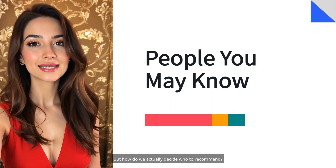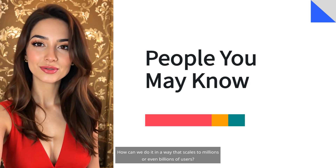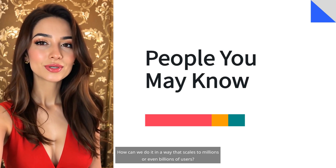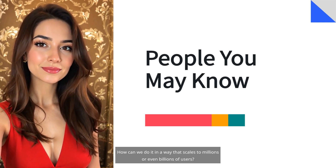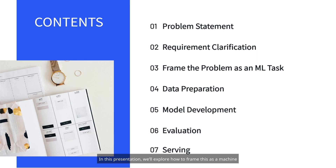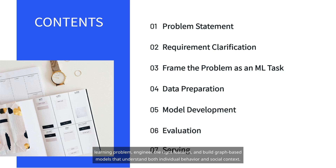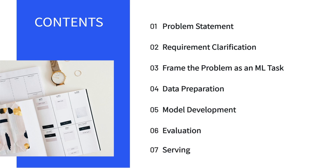But how do we actually decide who to recommend? How can we do it in a way that scales to millions or even billions of users? In this presentation, we'll explore how to frame this as a machine learning problem, engineer the right features, and build graph-based models that understand both individual behavior and social context. We'll also talk about evaluation, serving infrastructure, and how to ensure recommendations are both accurate and fast. Let's jump in.